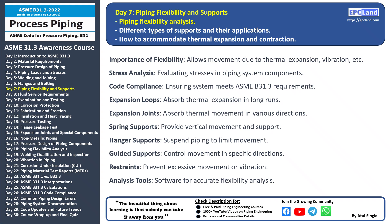Hanger supports suspend the piping, limiting its movement and ensuring proper alignment. Guided supports control movement in specific directions, maintaining the desired piping configuration. Restraints are used to prevent excessive movement and vibration in critical areas. Specialized software is used for flexibility analysis, helping engineers accurately predict and manage movement in the piping system.